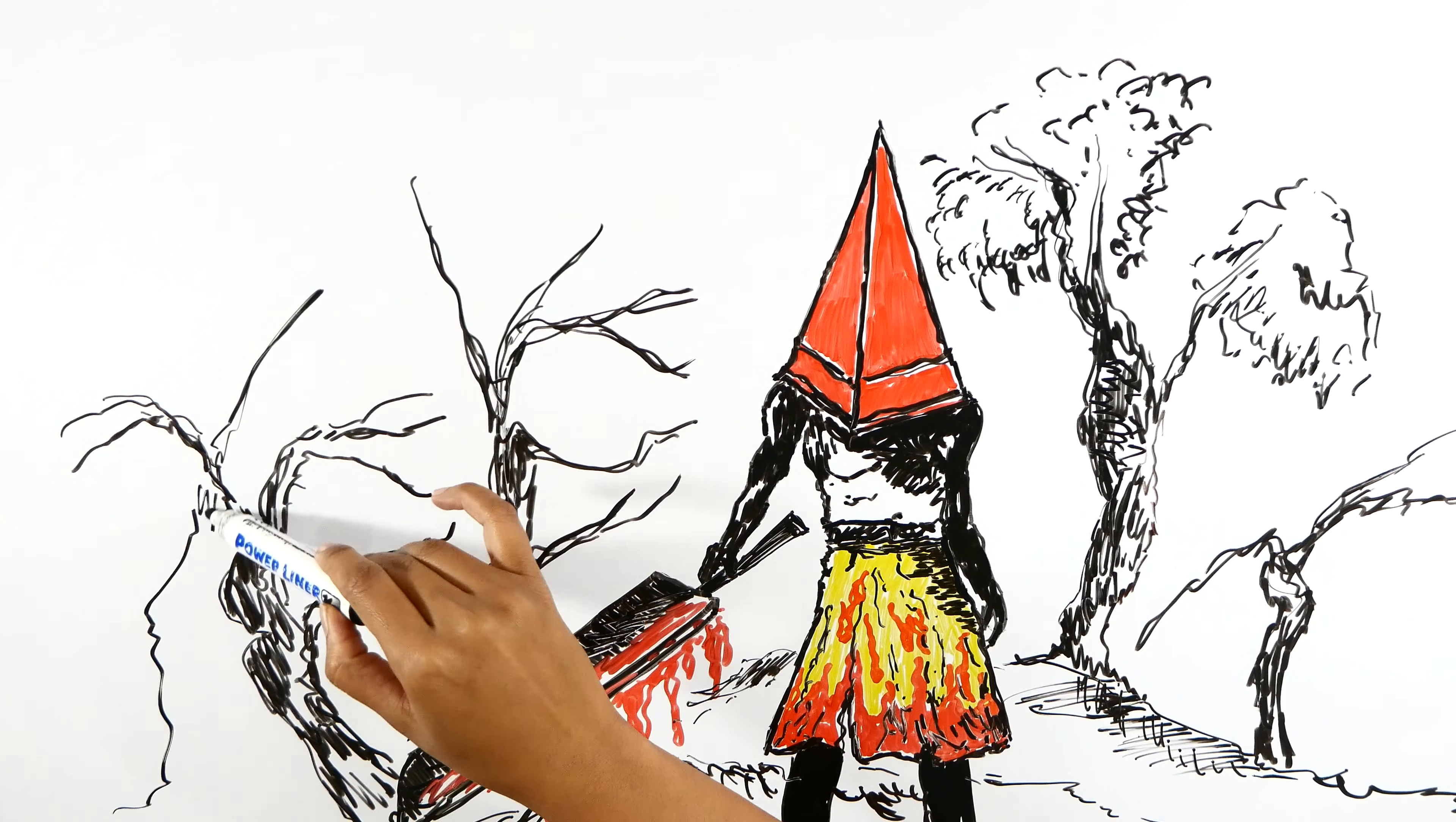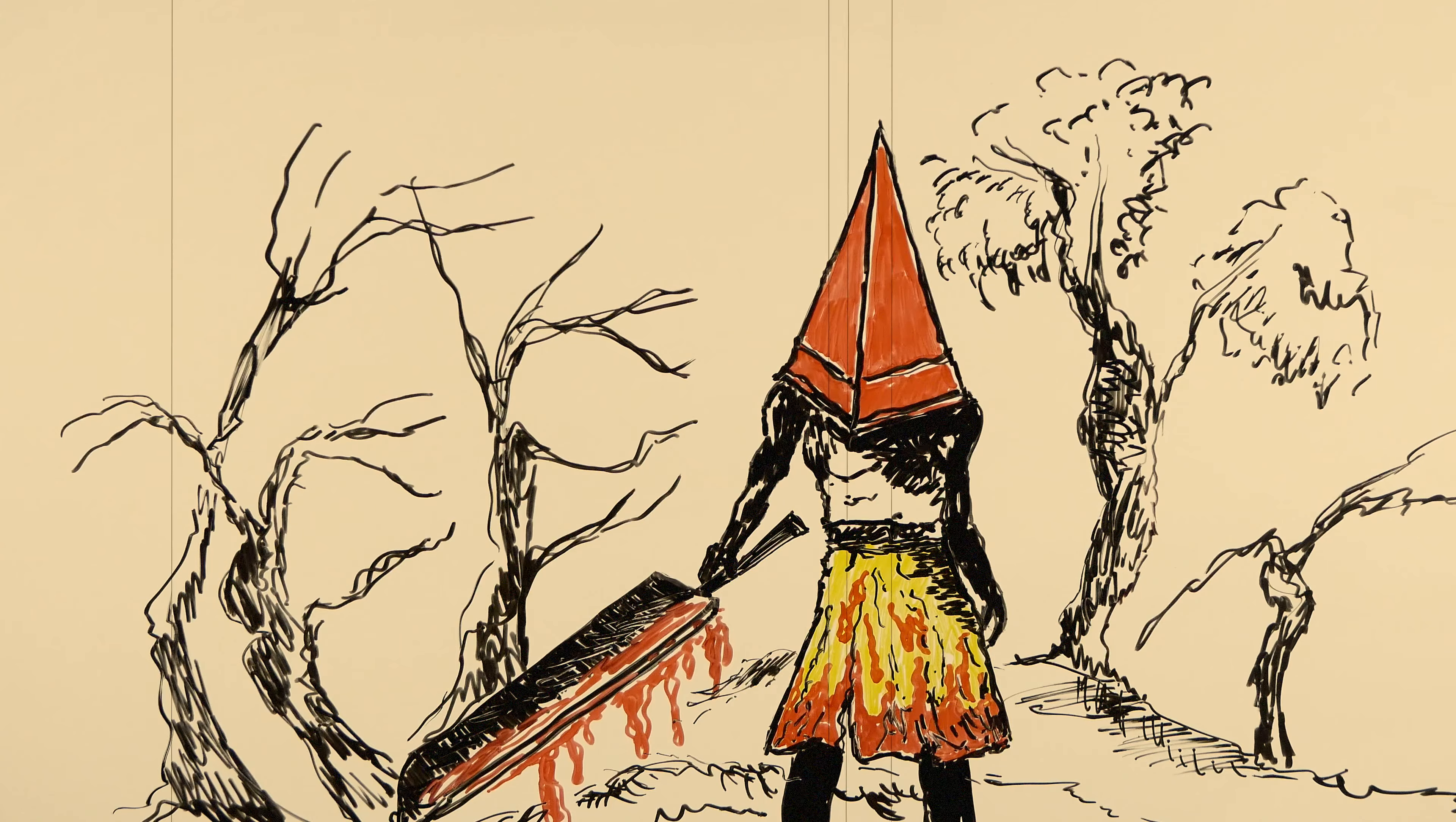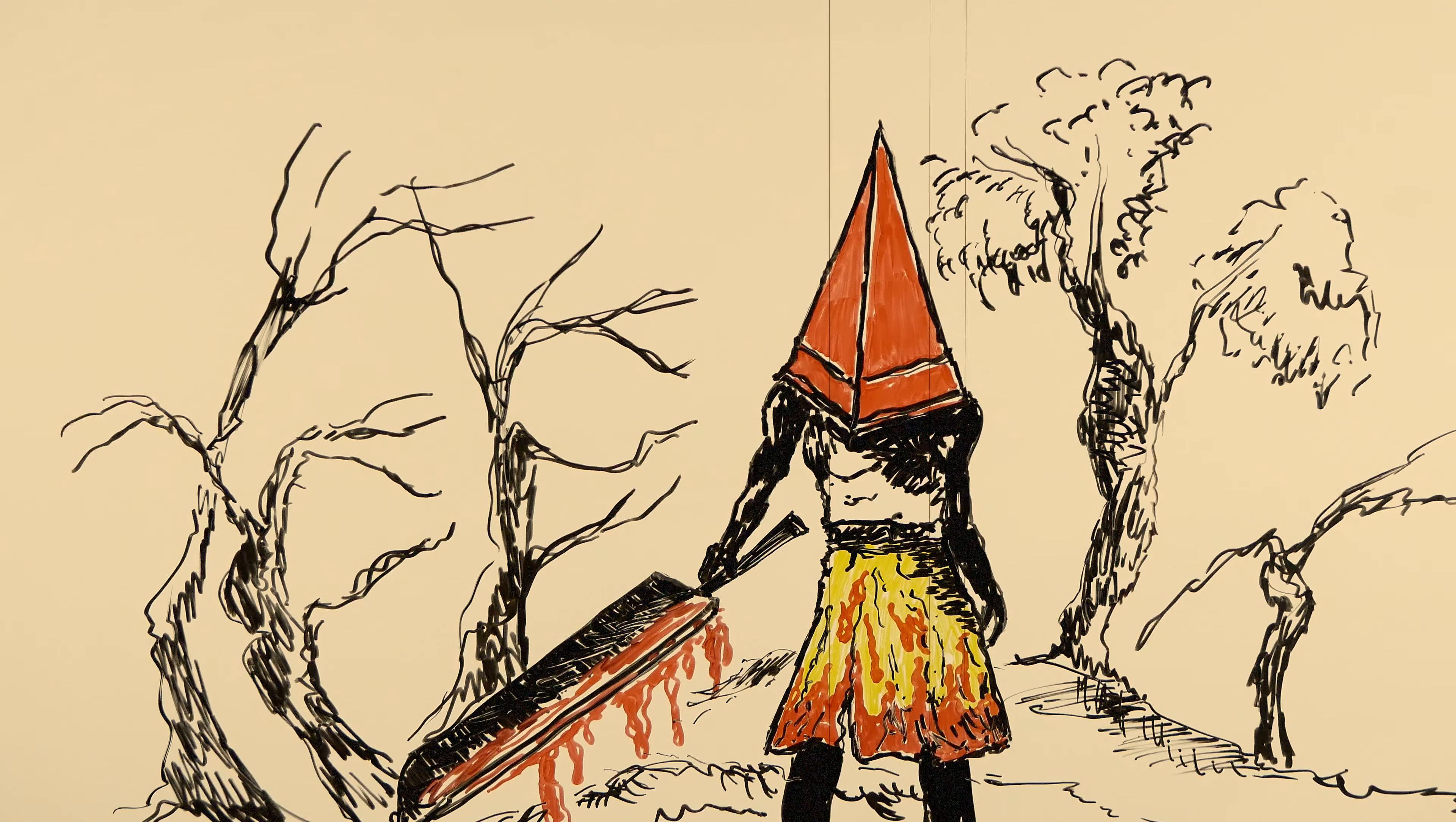The Pyramid Head's robe is pale and blood-soaked. This shows the reminder of Mary's blood in James' hand symbolically.